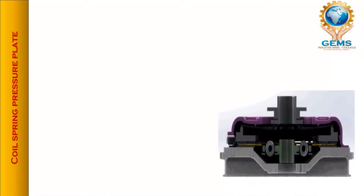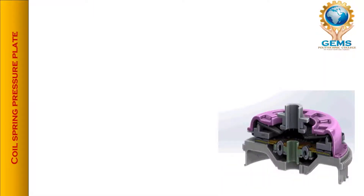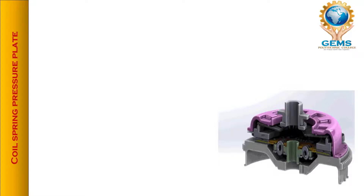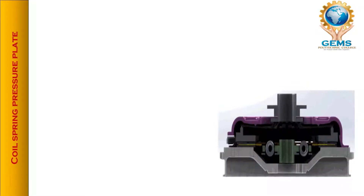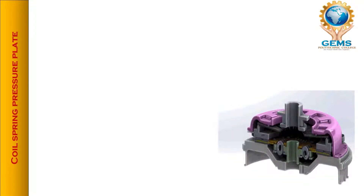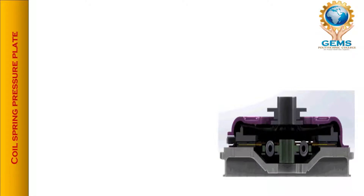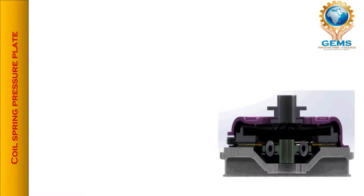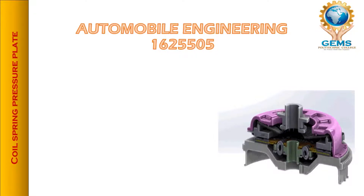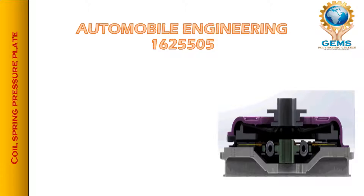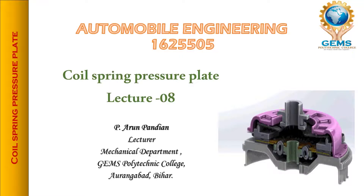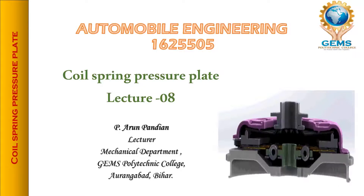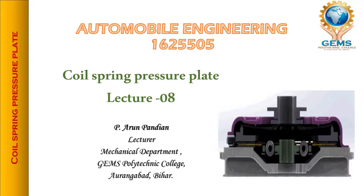Welcome to this video. This is my eighth lecture of the second unit on transmission systems. In the previous lecture, I gave an introduction on clutch and the necessity of clutch. In this unit, we are going to see about the coil spring clutch — two types: coil spring and diaphragm. This is automobile engineering, subject code 16-2250-5, as per ASPT Bihar. I'm Arun Pandian, lecturer in the mechanical department of James Polytechnic College.